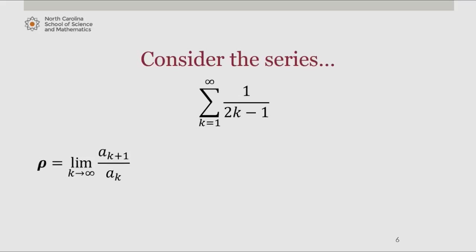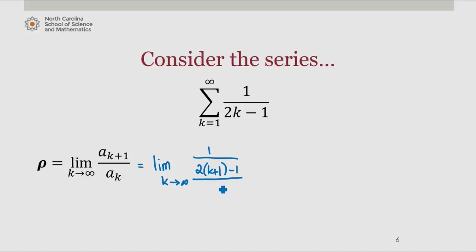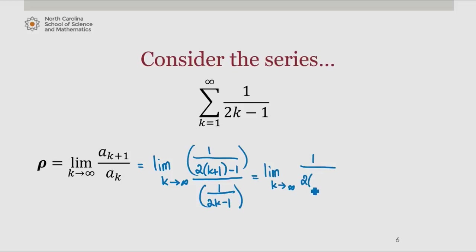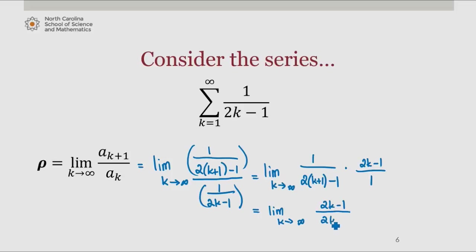For our last example, consider the infinite series from k equals 1 to infinity of 1 over 2k minus 1. Rho equals the limit as k approaches infinity of a sub k plus 1 over a sub k, which gives us 1 over 2 times k plus 1 minus 1, all over 1 over 2k minus 1. Rewriting this, we get 2k minus 1 over 2k plus 1.